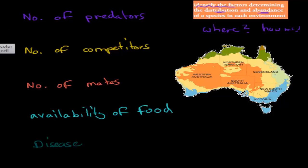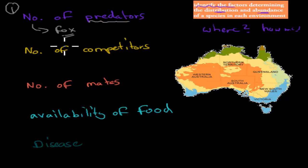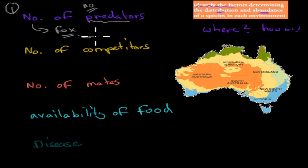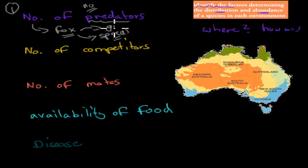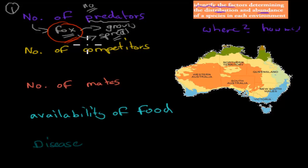Factor number one is number of predators. That affects both distribution and abundance. For example, the fox was introduced to Australia — it's European, but when it came to Australia it had no predators, so it could do whatever it wanted. Fox numbers grew, and it spread across Australia. So distribution — we can find it in more places — and abundance — there are more and more. The more predators you have, the less abundance and the fewer places you can find them.